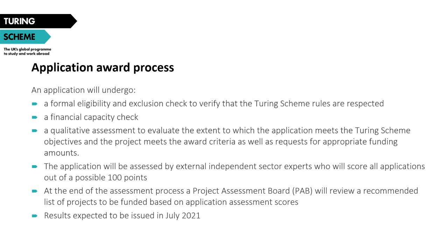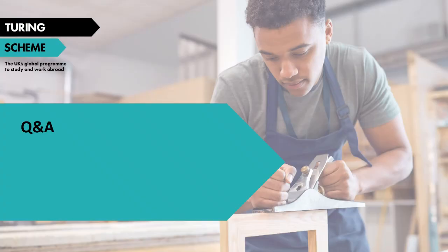On the application and award process: your application first undergoes an eligibility check to confirm you are an eligible applicant organisation. It is then sent to an external expert for assessment, where your qualitative questions will be scored out of a possible 100 points. Our project assessment board will review a recommended list of projects to be funded based on application scores, and results will be issued in July 2021.